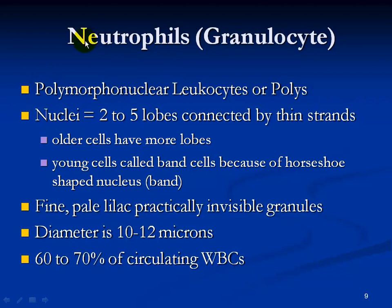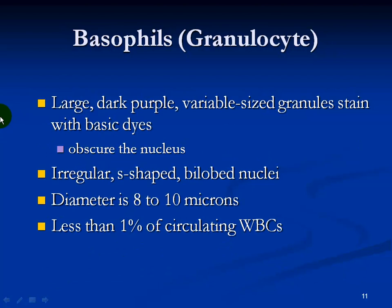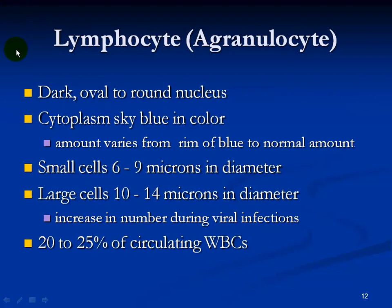Neutrophils are the majority of circulating white blood cells. Eosinophils are fairly large and make up 2 to 4% of circulating white blood cells. The second part of the extra credit question is the number 3. Basophils are large, stain dark purple, and are less than 1% of circulating white blood cells. Lymphocytes have a dark ovoid nucleus, are small cells, increase in number during viral infections, and make up about 20 to 25% of all circulating white blood cells.